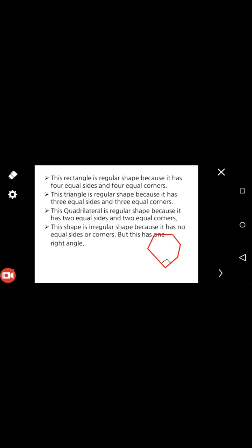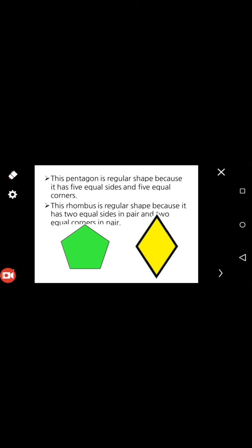Students, I'm giving you two minutes to note down. This is a pentagon, a regular shape because it has five equal sides: one, two, three, four, five, and five equal corners. Side means corners. And this one is a rhombus, a regular shape because it has two equal sides in pairs—one opposite side pair, second opposite sides—and two equal corners in pairs.